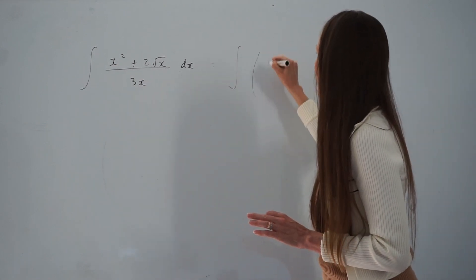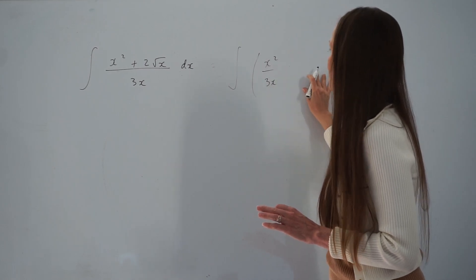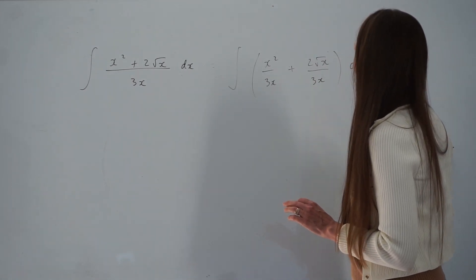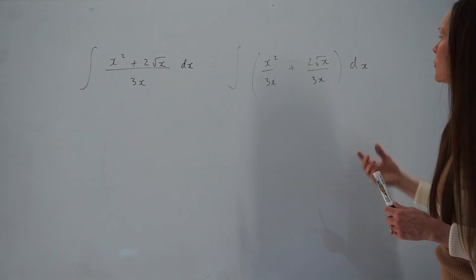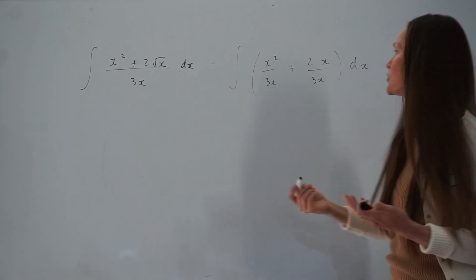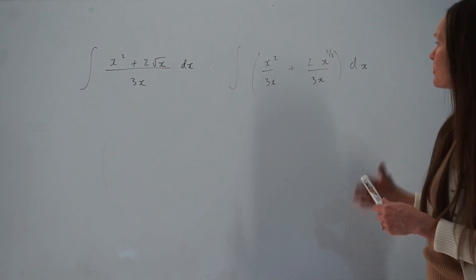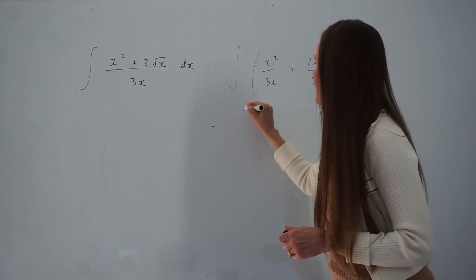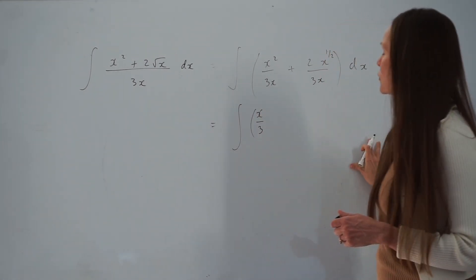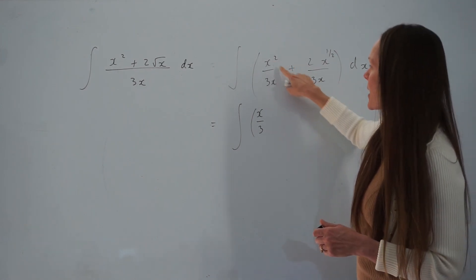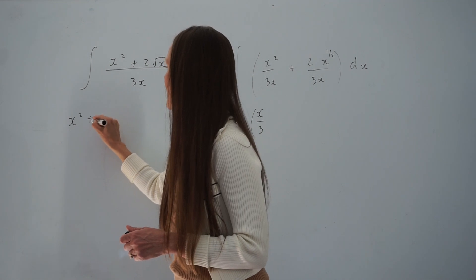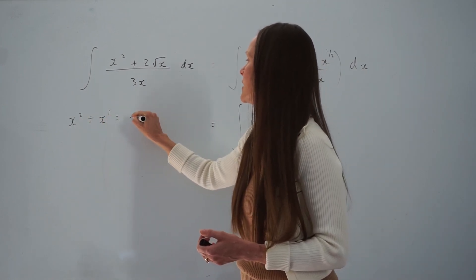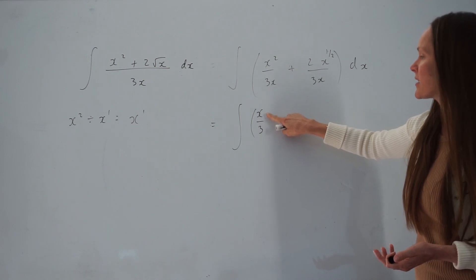I'm going to start by rewriting this fraction as two separate fractions: x squared over 3x, and 2 root x also over 3x. You can also rewrite the square root of x in its power form — square rooting is the same as raising to the power of a half. Simplifying the first fraction, x squared divided by 3x leaves x over 3. Using index rules, x squared divided by x is x to the power of 2 minus 1, which is x to the power of 1, just x. So x over 3.